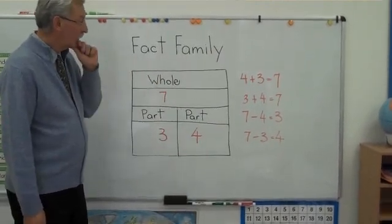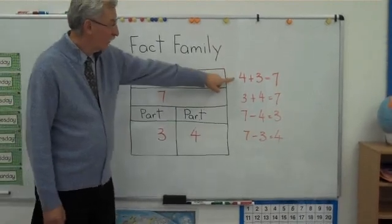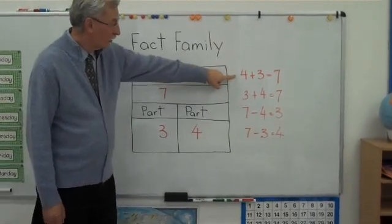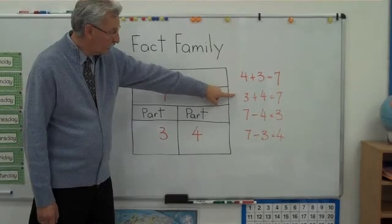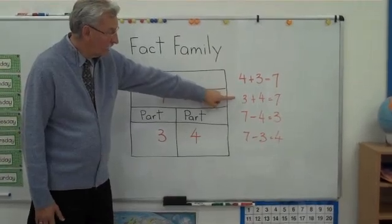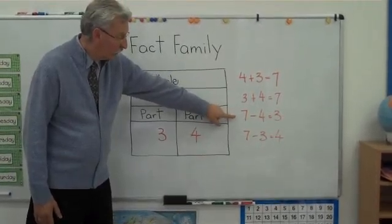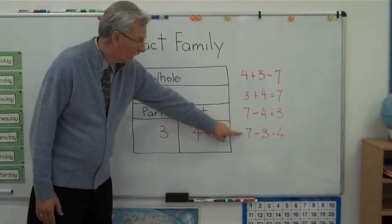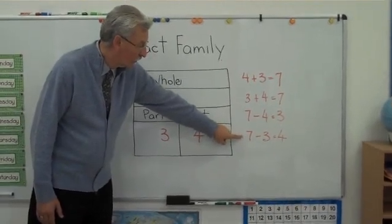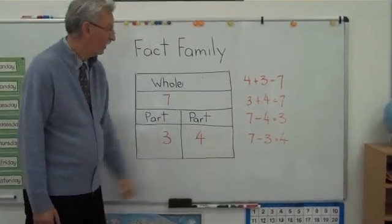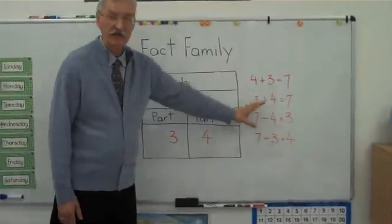So for the number 7, we can say: 4 plus 3 equals 7, 3 plus 4 equals 7, 7 minus 4 equals 3, and 7 minus 3 equals 4. These are a fact family.